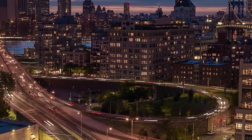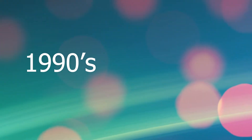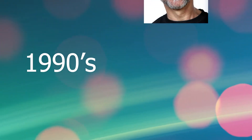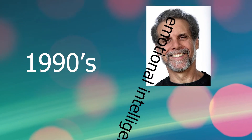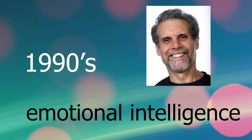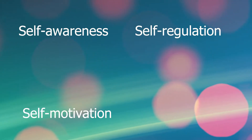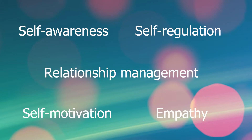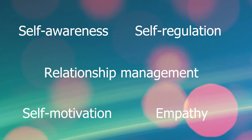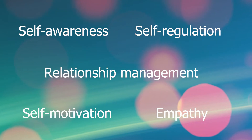In the 1990s, a man named Daniel Goleman created the concept of emotional intelligence, composed of five elements: self-awareness, self-regulation, self-motivation, empathy, and relationship management. In order to develop these components, the first step is to understand the emotional process.